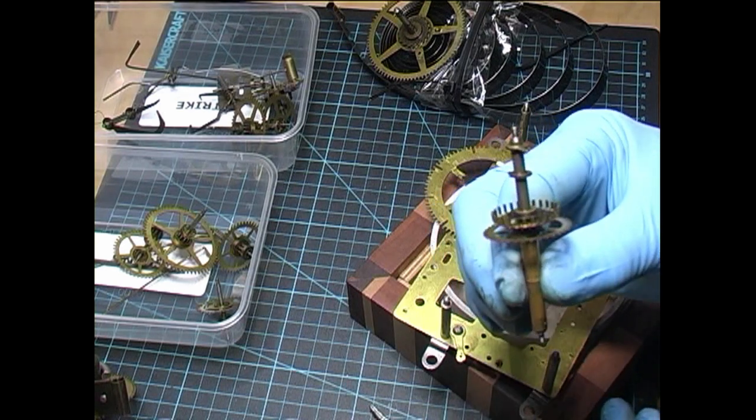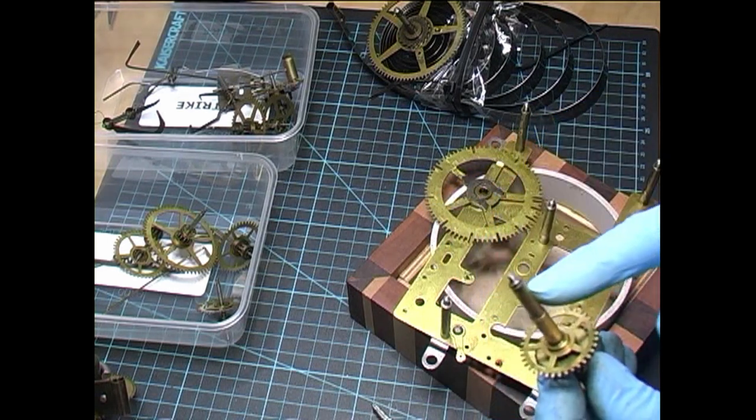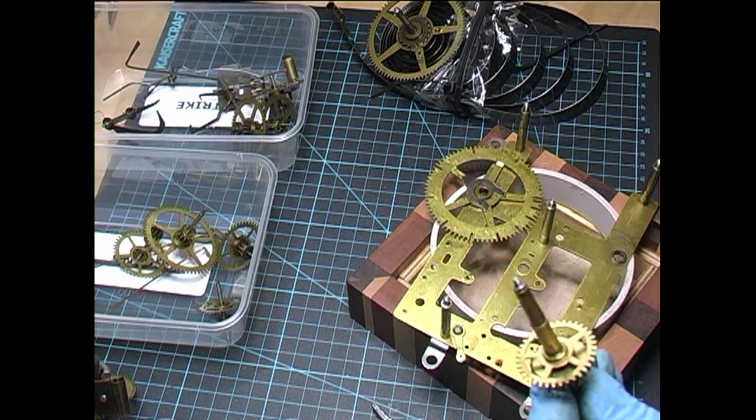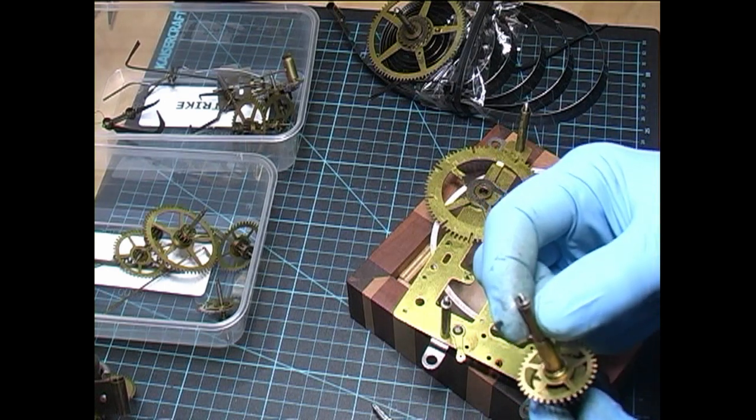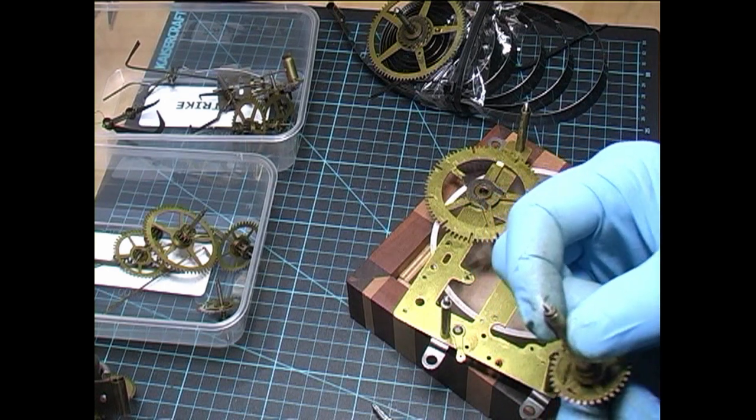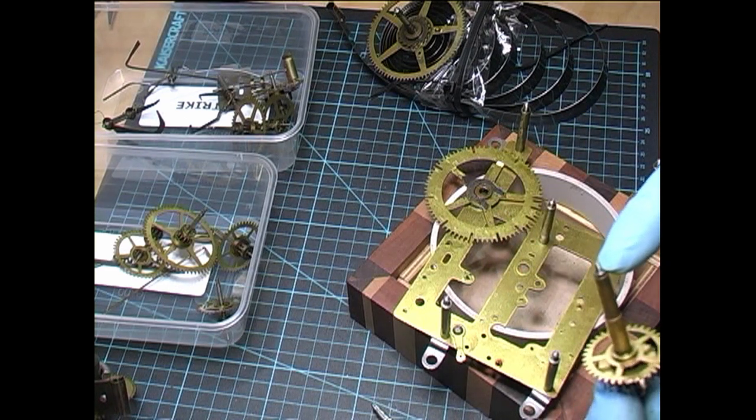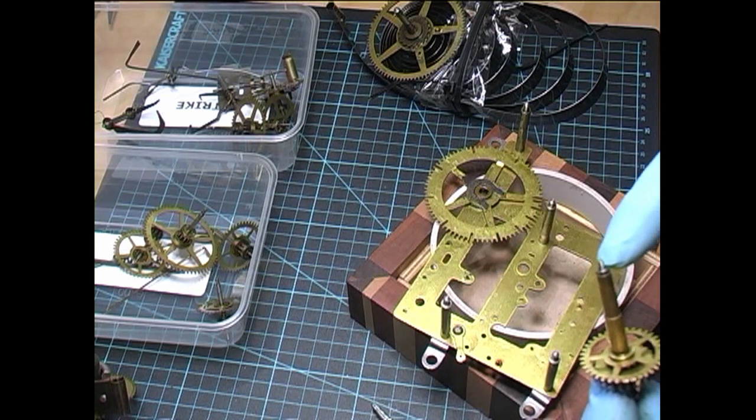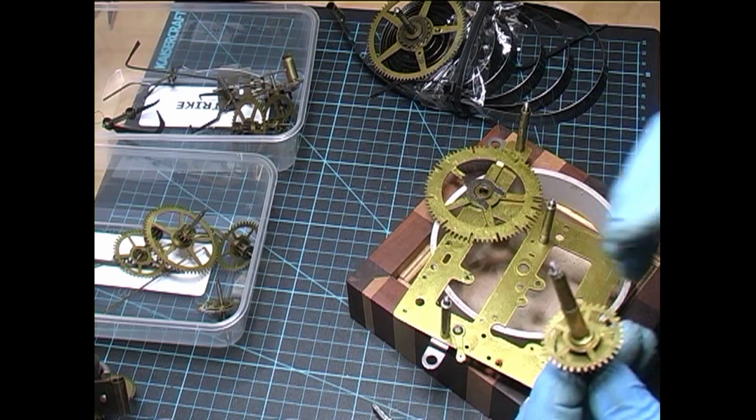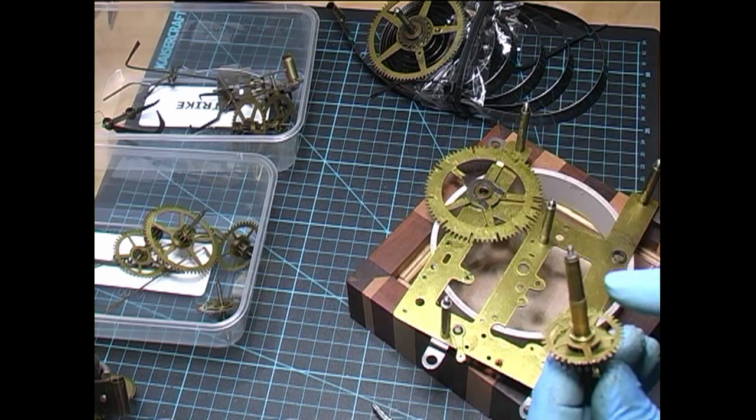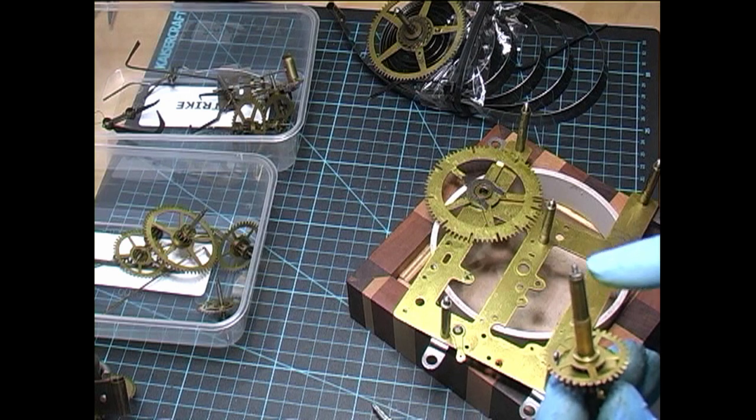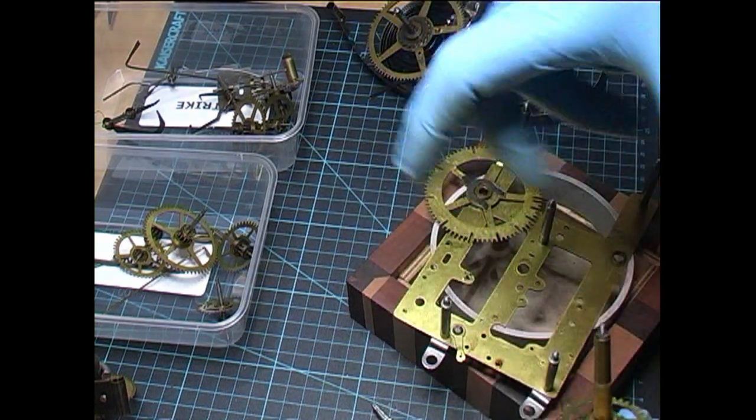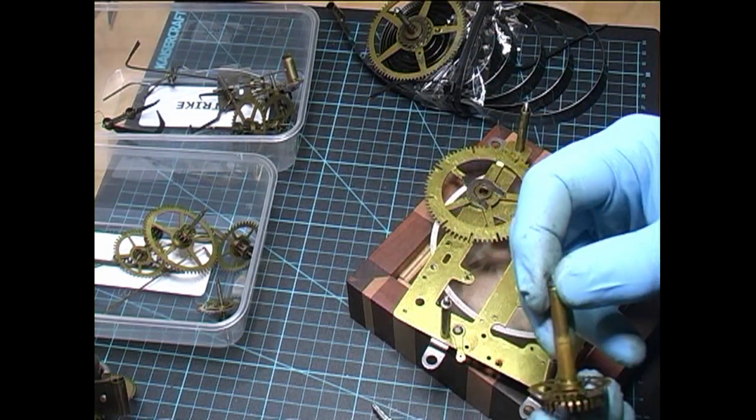That's called a motion works. That's a cannon arbor where the hour hand sits, held by friction on there. That smaller arbor in there is the minute hand arbor. You can see it's square on two sides. The hand sits over that and turns.